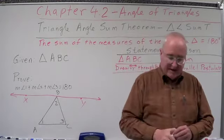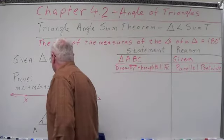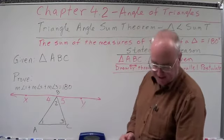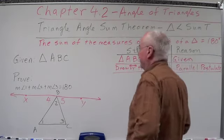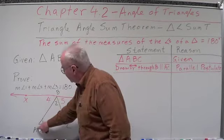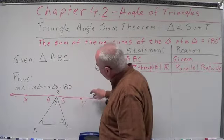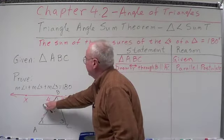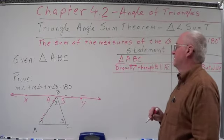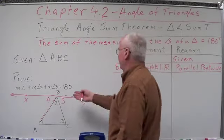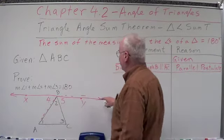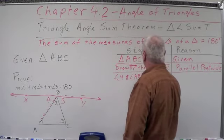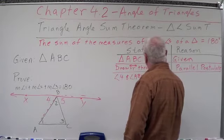Now we're going to number some angles. We'll label this angle here as angle 4, and this angle as angle 5. The next statement: angle 4 and angle ABY make a straight line — they're a linear pair. So angle 4 and angle ABY are a linear pair, by the definition of a linear pair: two angles that make a straight line.